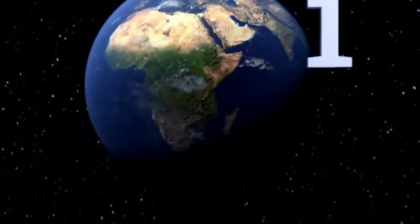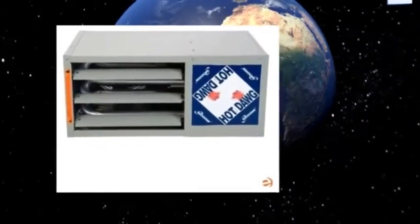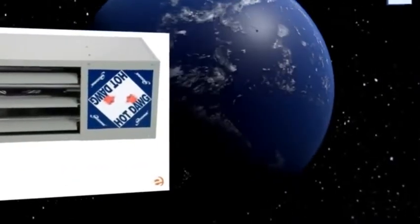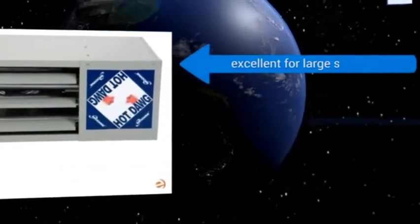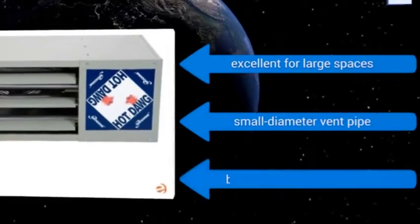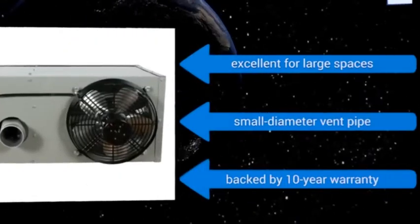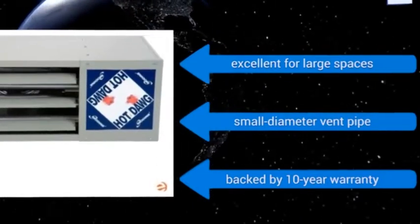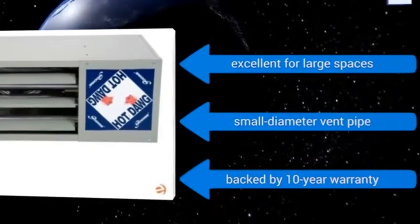And coming in at number 1 on our list, if you don't want to spend all day waiting for your garage to heat up, the 45000 BTU Natural Gas Modine Hot Dog banishes the cold in no time. It installs one inch from the ceiling with two angle brackets and the standard exhaust allows either sidewall or roof venting. It's excellent for large spaces and comes with a small diameter vent pipe and a 10-year warranty.